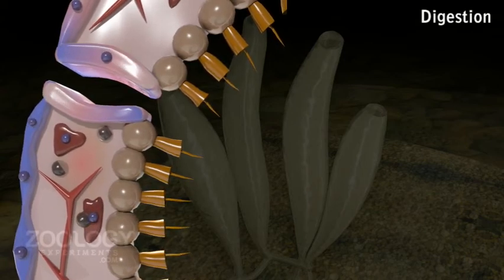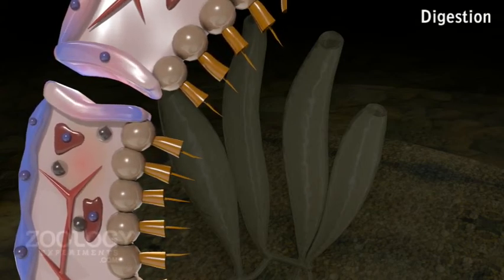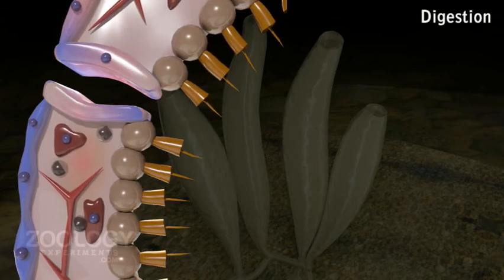Undigested residue is eliminated by the amoebocyte into the spongocoel.